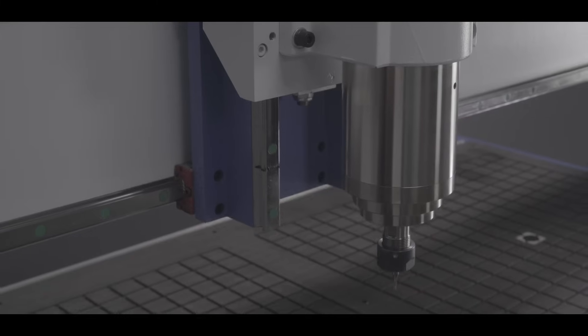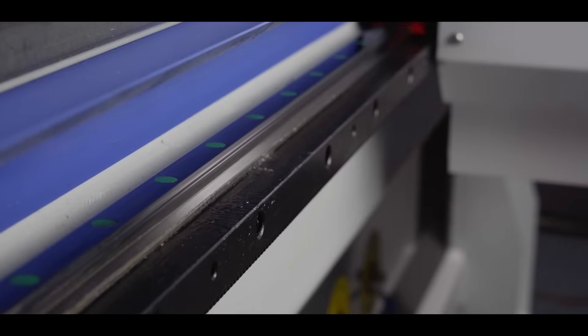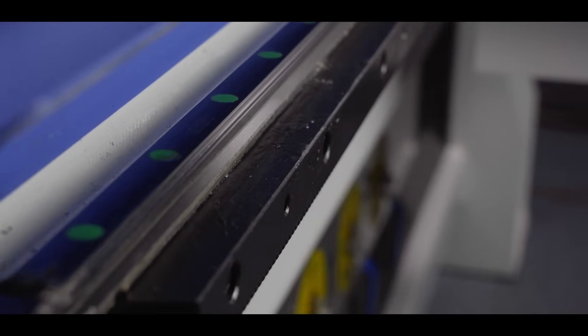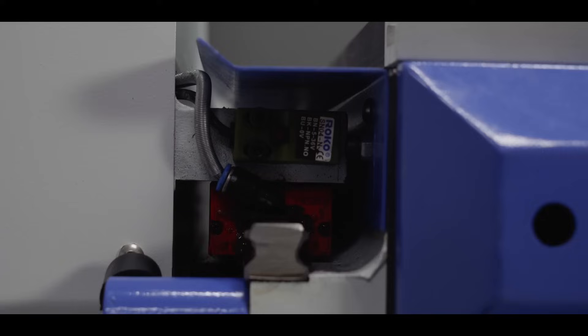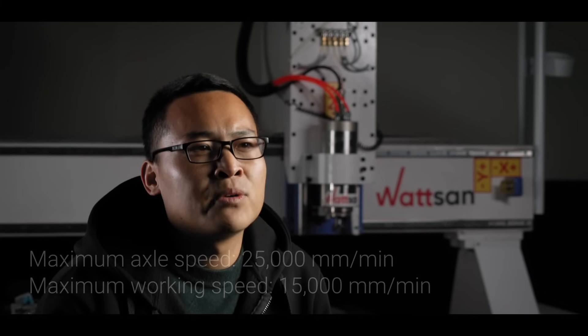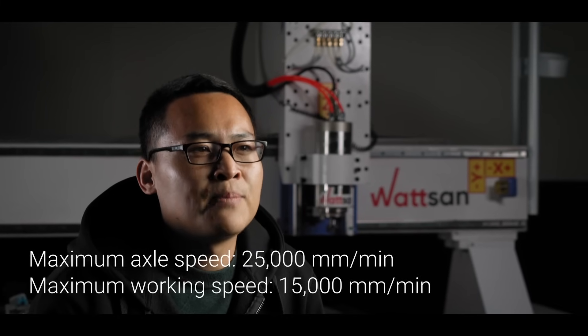On this machine, we use reliable 20mm thick linear guide rails. European quality provides less resistance during the portal movement. Thanks to these guide rails, maximum axial and working speeds are high.